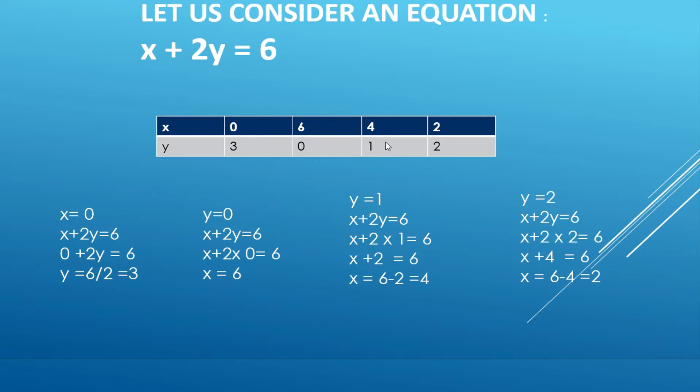Now we will put y equal to one. See, whenever you're having an equation, it is always easy that you put the value of the variable which is having a coefficient, because for division we have no problem. Here we have 2y. It's up to you where you put it, but it will be easy if you put value here rather than here because we have a coefficient.